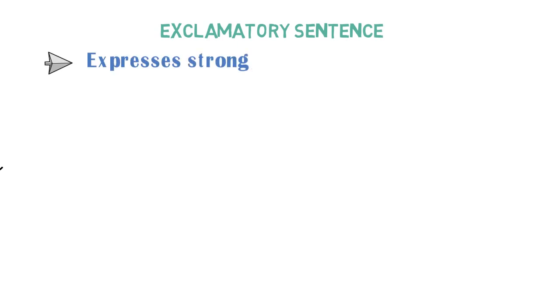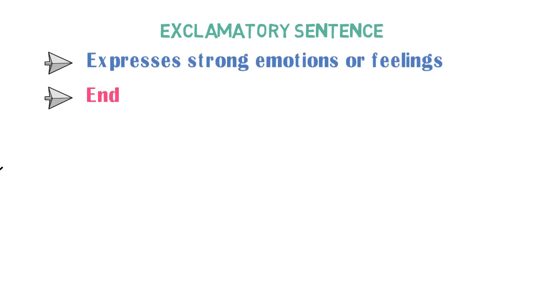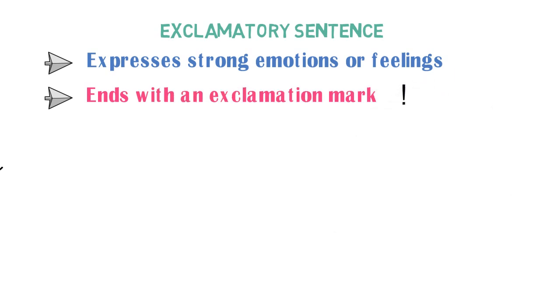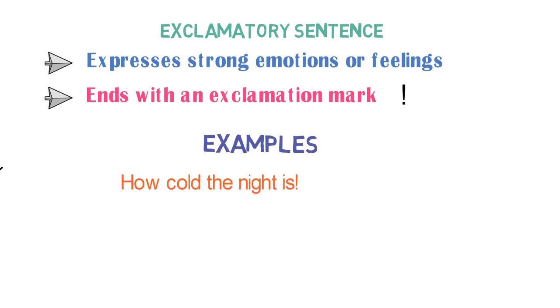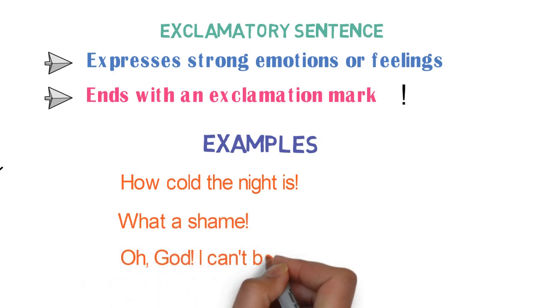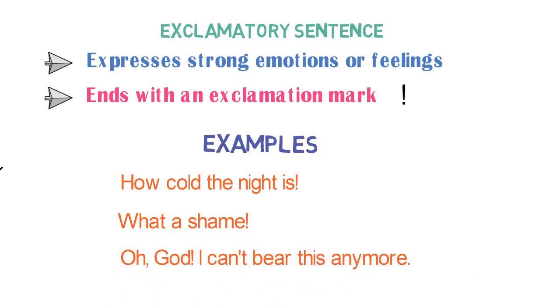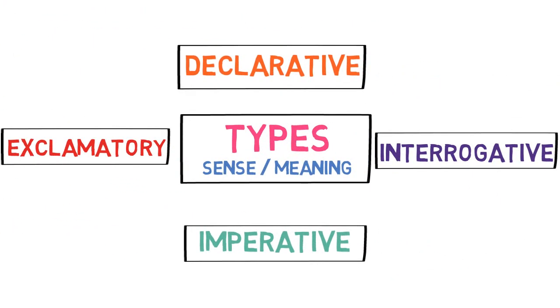Now let's look into the fourth type of sentence: the exclamatory sentence. An exclamatory sentence expresses strong emotions or feelings. It ends with an exclamation mark. Examples include: 'How cold the night is!', 'What a shame!', and 'Oh God, I can't bear this anymore!' These are the four types of sentences.